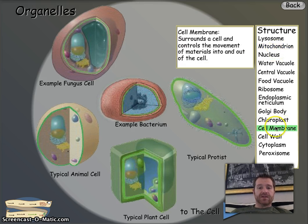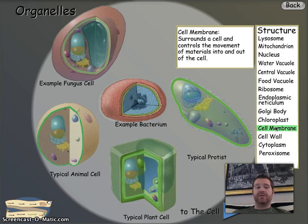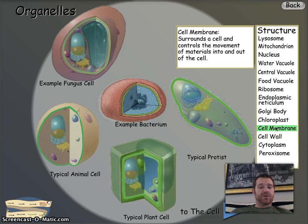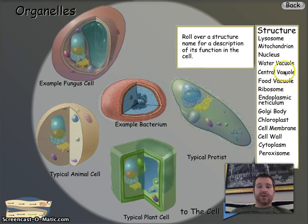Cell membrane is next. For a cell membrane, you can write: protects cell and controls what goes into and out of the cell. It's in both plants and animals.